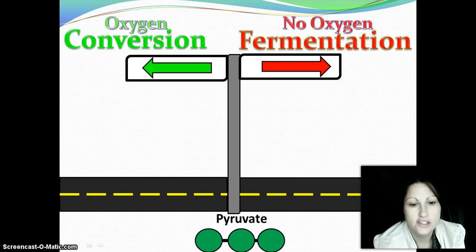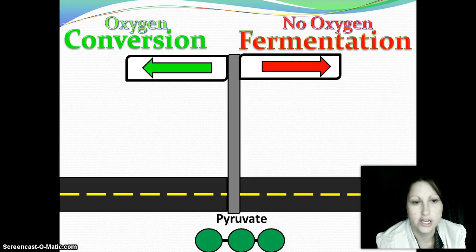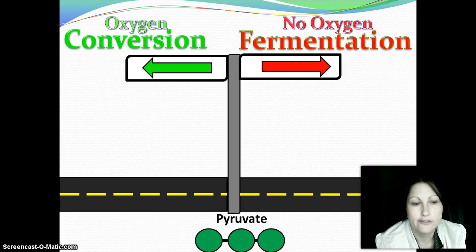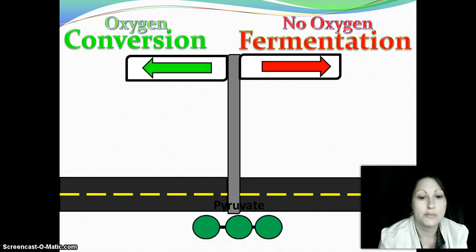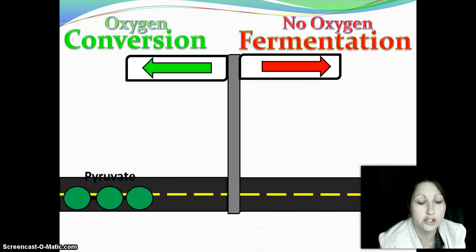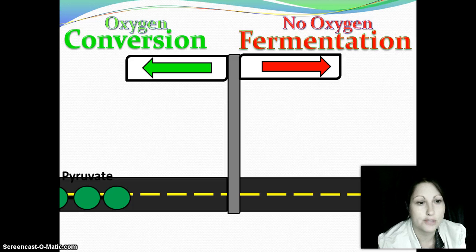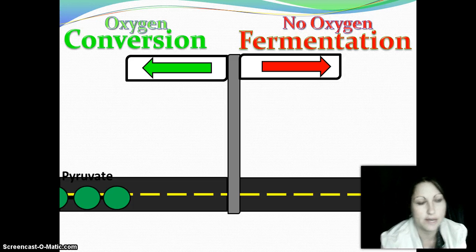After glycolysis, we're faced with a crossroads — an important decision. That pyruvate that we just made has a decision to make here. If we have enough oxygen available to us, we want to go to plan A, which would be going on to conversion. If we don't, the only other option available is fermentation, which we'll talk about at the end.